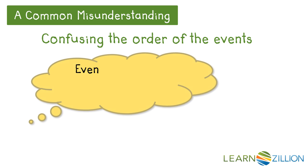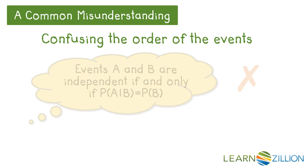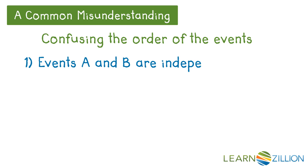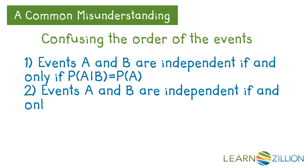It's easy to confuse the order of events and think that A and B are independent if and only if the probability of A given B is the same as the probability of B — but that's incorrect. There are two correct statements: events A and B are independent if and only if P(A|B) equals P(A), or equivalently, P(B|A) equals P(B). The examples we'll look at will help you understand this better.